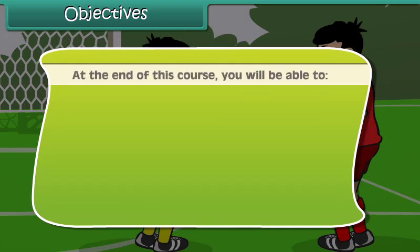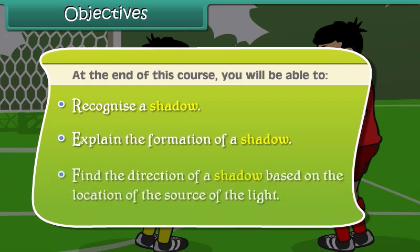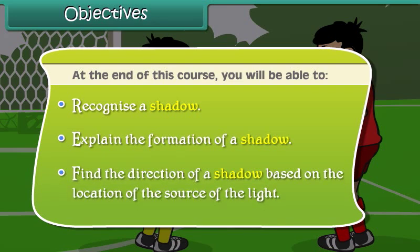At the end of this course, you will be able to recognize a shadow, explain the formation of a shadow, and find the direction of a shadow based on the location of the source of light.